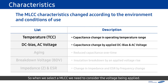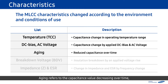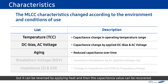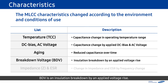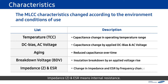So when we select an MLCC, we need to consider the voltage being applied. Aging refers to the capacitance value decreasing over time. This is because of the material characteristics, but it can be reversed by applying heat and then the capacitance value can be recovered. BDV is an insulation breakdown caused by an applied voltage rise. Impedance Z and ESR means internal resistance. For additional characteristics, we will explain in another training video.